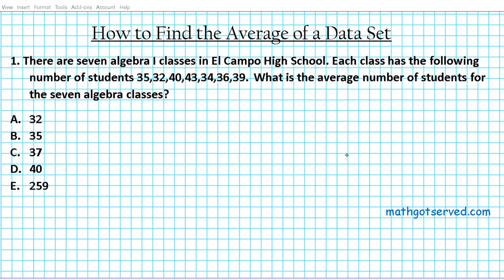I'm just like number one in the volume one series, we're going to be looking at how to find the average of a data set. It reads: there are seven algebra one classes in El Campo High School, each class has the following number of students: 35, 32, 40, 43, 34, 36, and 39. Question: what is the average number of students for the seven algebra classes?